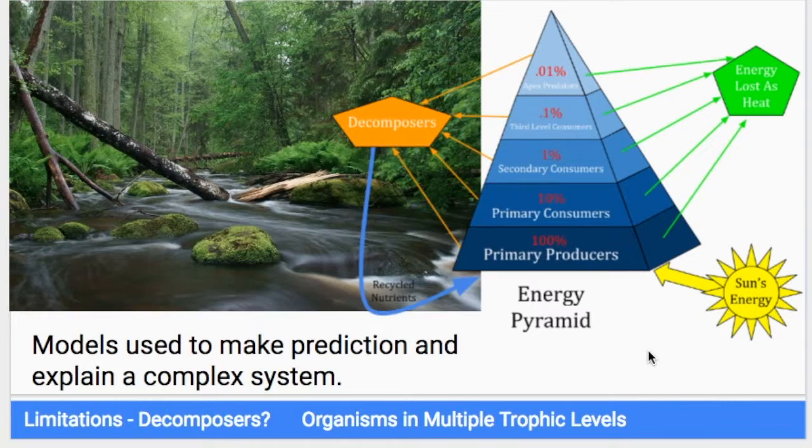However, an energy pyramid like this also has its limitations, as all models do. In this case, the decomposers aren't really represented very well. They're sort of spread out through all of them, and this doesn't show how much energy is going from one trophic level into each decomposers. They're just saying, the decomposers are there, we don't know what's happening. This food pyramid, this trophic pyramid, also doesn't show organisms that might fit at multiple levels.